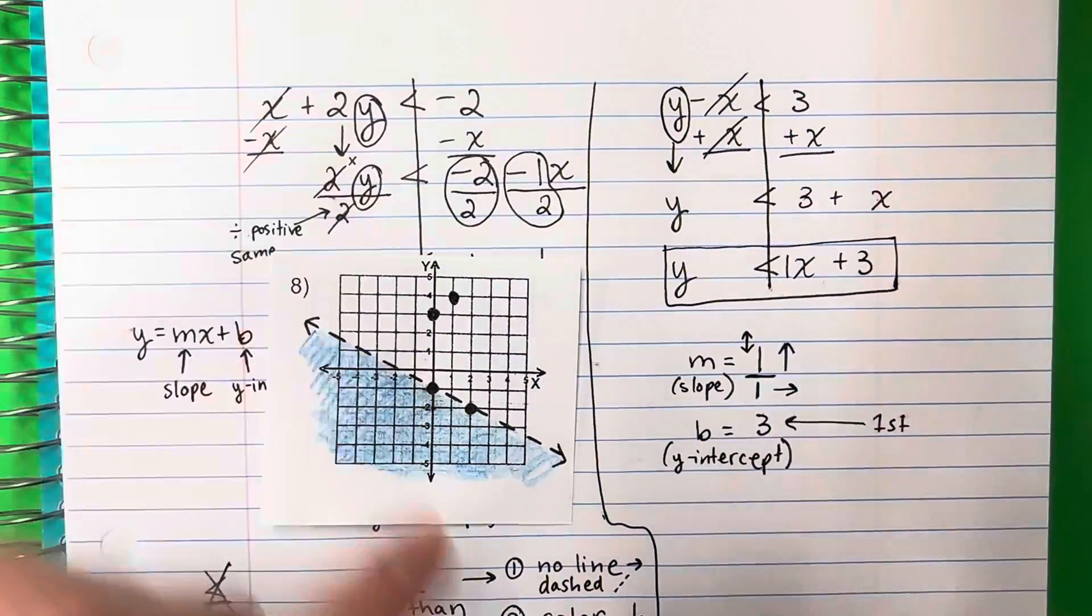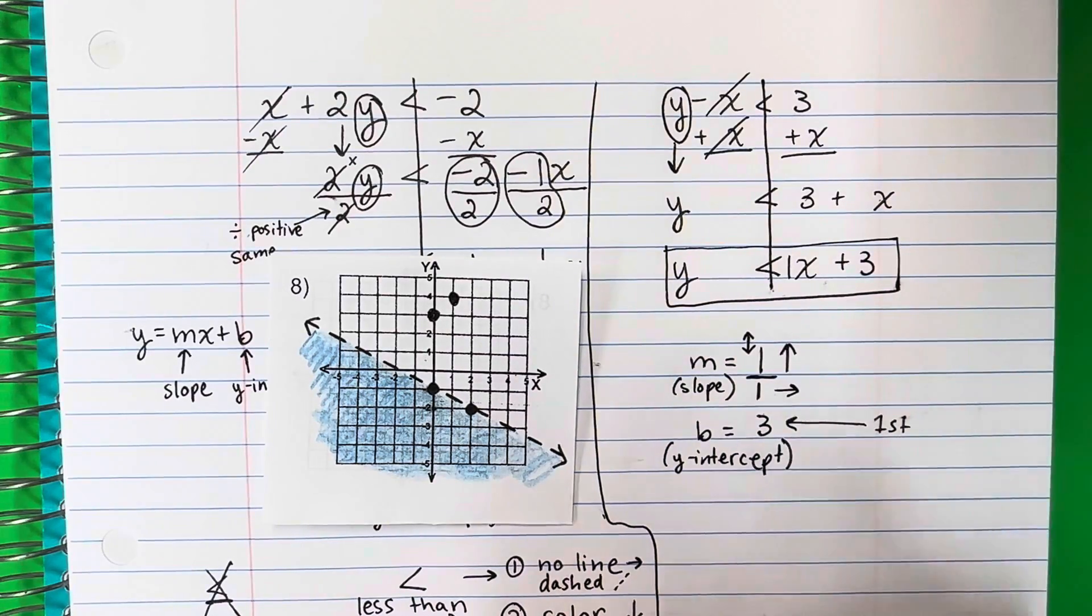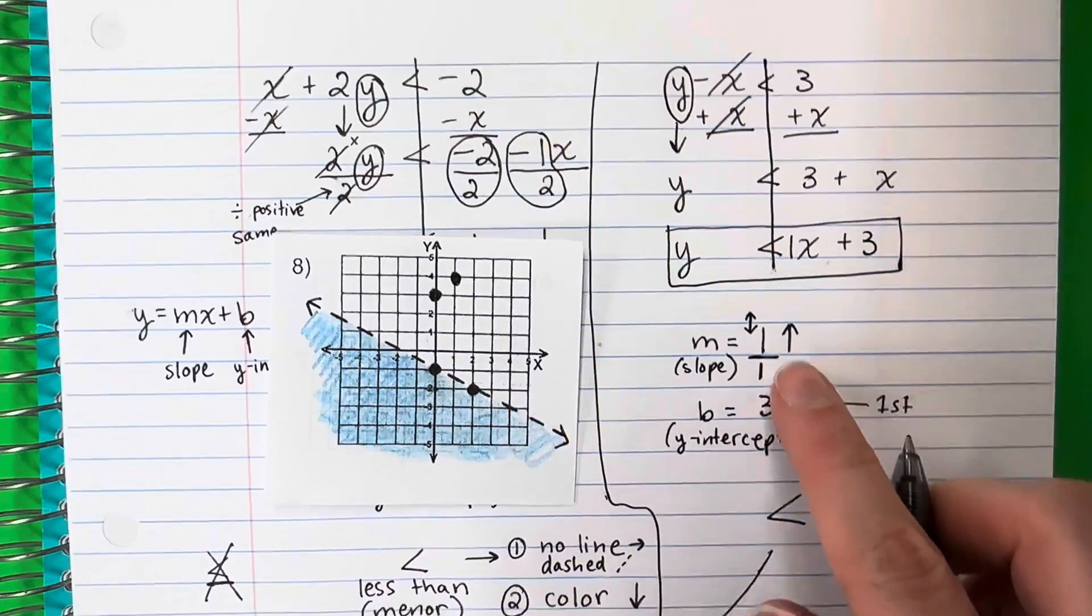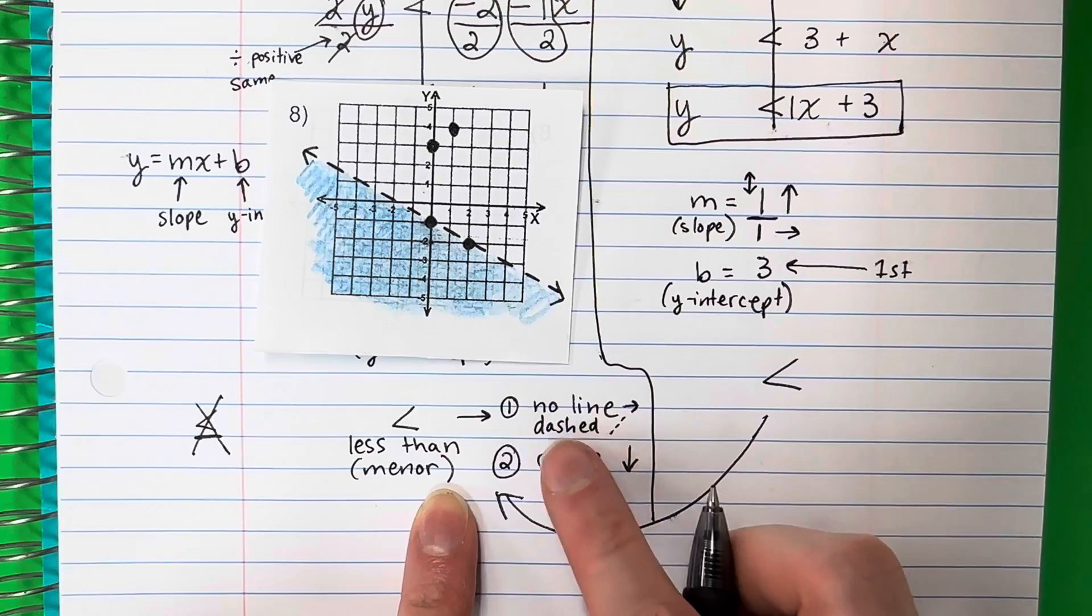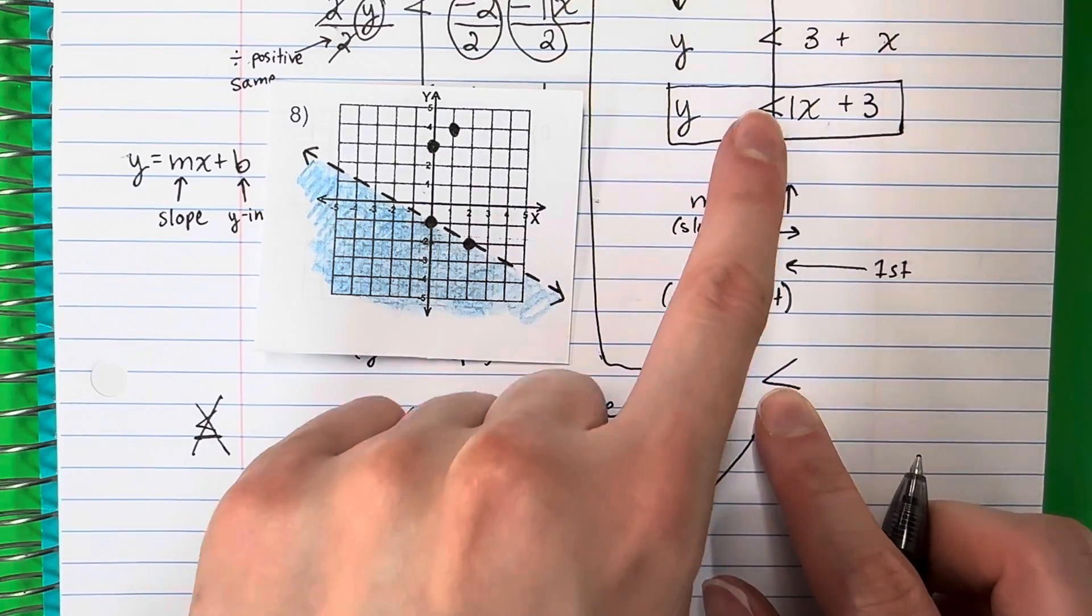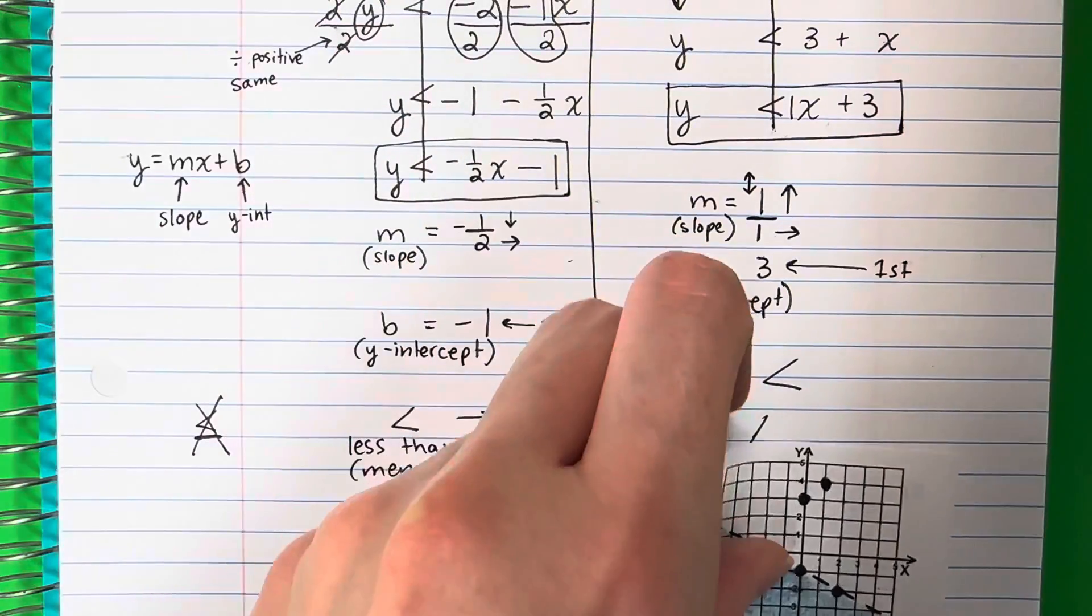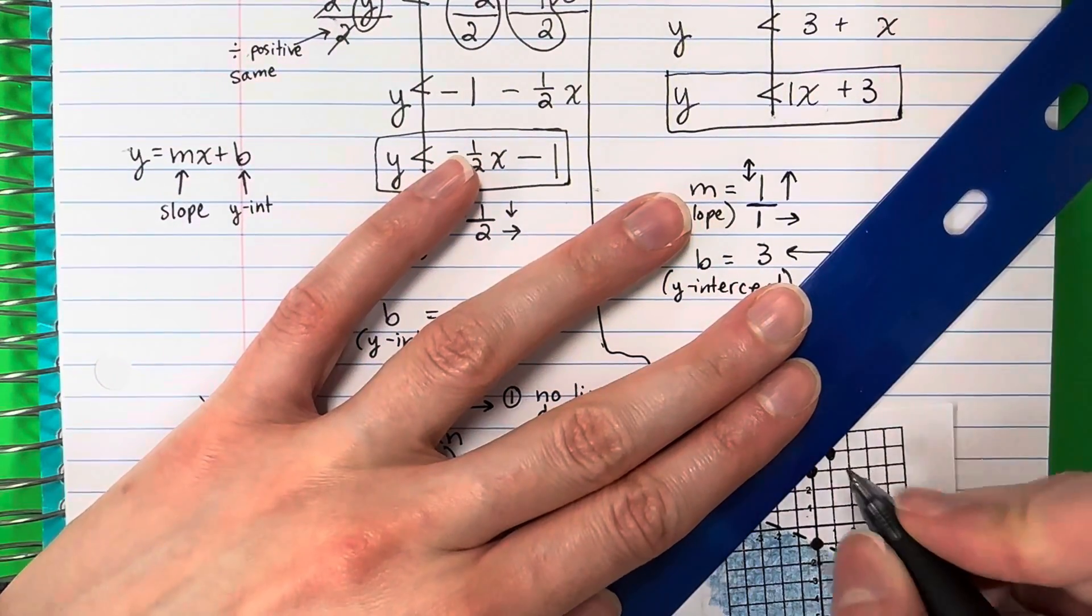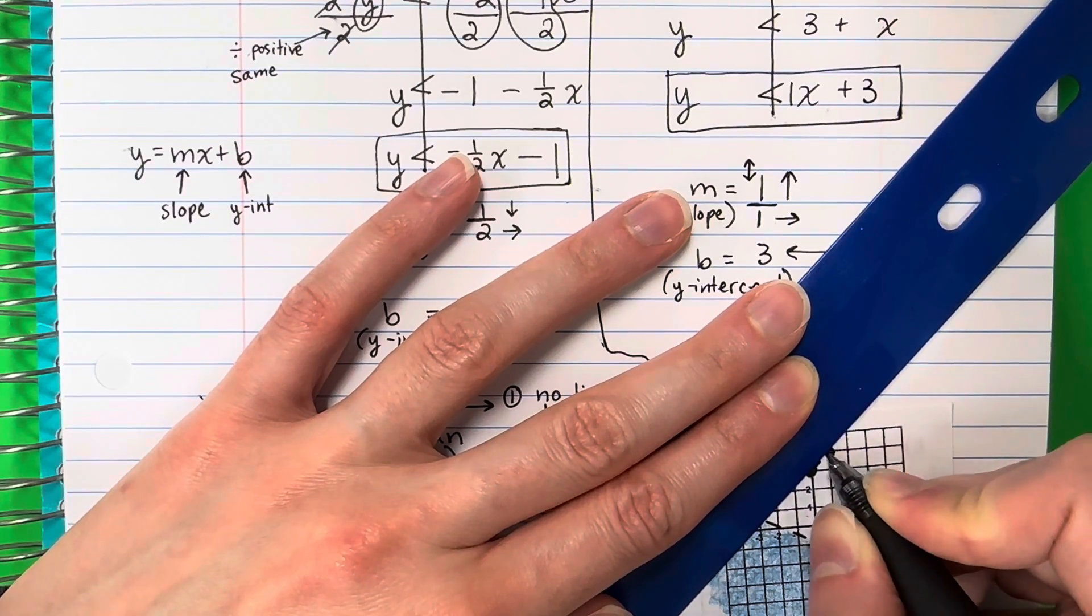Now again, this is less than. So again, we're going to be doing this. It's the same sign. So we're going to go ahead and do this. We're going to do no line, there's no line down. So it's going to be dashed. So let's go ahead and do a dashed line, very carefully.